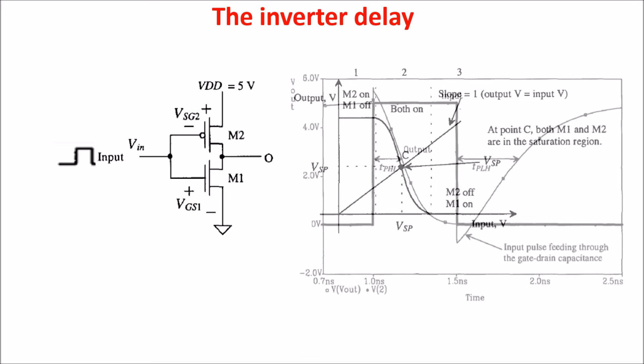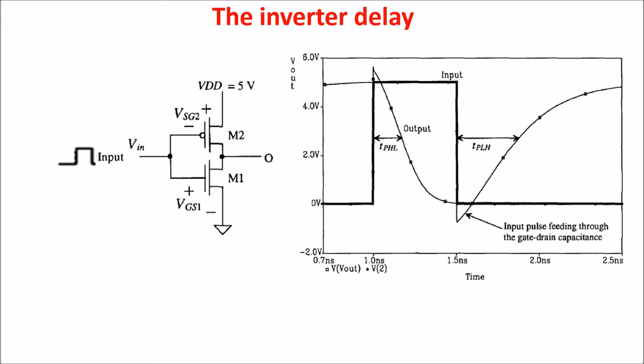So, we define two times. The first time starts when the high pulse arrives in input till the moment the output and the input have the same value VSP, so till the switching point. This is the time for the output transition from high to low.